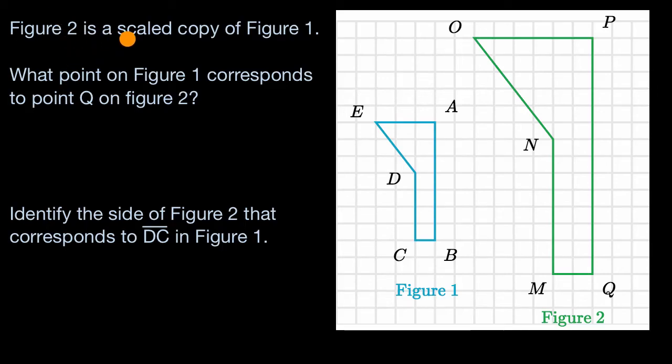We are told that figure two is a scaled copy of figure one. And we can verify that by comparing corresponding sides. Corresponding sides are sides that have the same relative position, they're playing the same role in each of the diagrams, even if the diagrams are scaled versions of each other, even if they are different sizes.